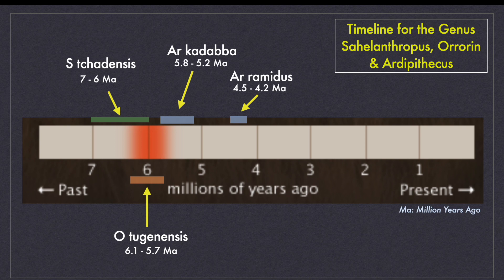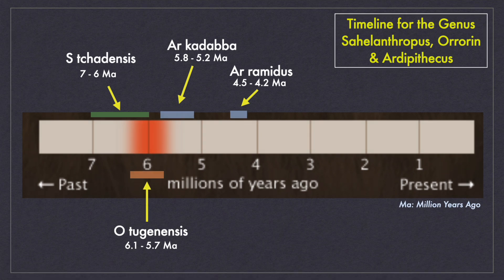On your screen, you are seeing the timeline for these three genera. In the evolution chronology, the species Sahelanthropus chadensis appeared first, then came Ororin tugenensis, followed by Ardipithecus kadabba, and then Ardipithecus ramidus. But their fossils were discovered in the exact reverse order. For this video, let's go through the species in the order of their discovery.